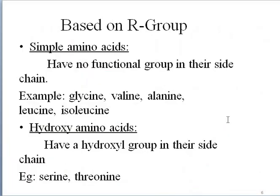Based on R group, simple amino acids have no functional group in their side chain. Examples include glycine, valine, alanine, etc. Some amino acids have a hydroxy amino group.